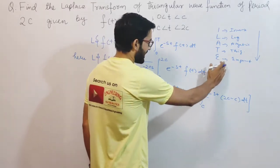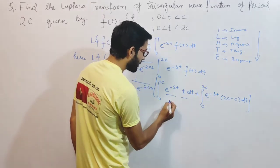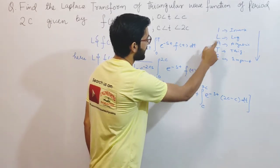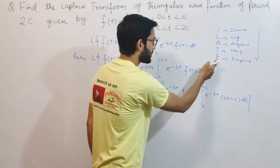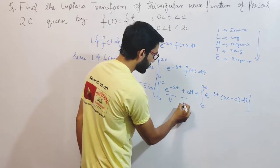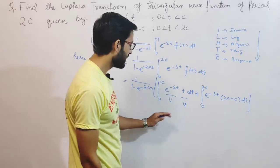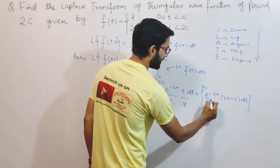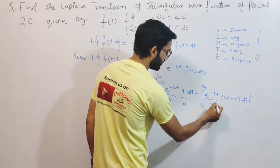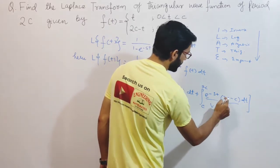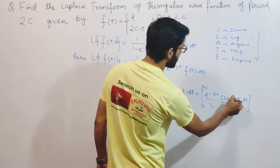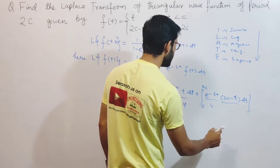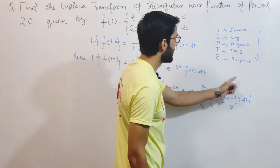In our integrals, we have an exponential function e^(-st) and algebraic functions t and (2c minus t). Since algebraic comes before exponential in ILATE, algebraic is u and exponential is v. So for the first integral: u = t and v = e^(-st). For the second integral: u = (2c minus t) and v = e^(-st).